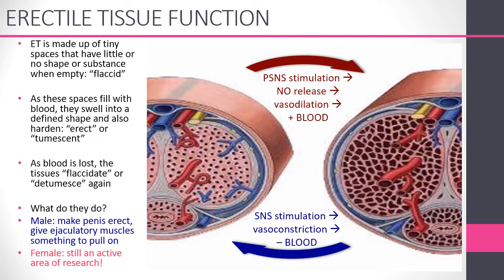How does erectile tissue work? The tissue is made of tiny spaces that by themselves have little or no shape or substance — they're called flaccid or detumescent. You can think of it like taking a bunch of empty water balloons and tying them together; you'd have a flexible, floppy, flaccid substance. As the spaces are filled with blood during the erection process, they swell to a defined shape and harden — they become erect or tumescent. It's like filling those water balloons with water; each one becomes a little rigid, and tied together they form a rigid structure.